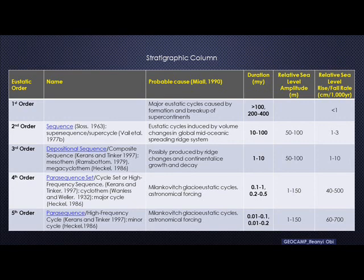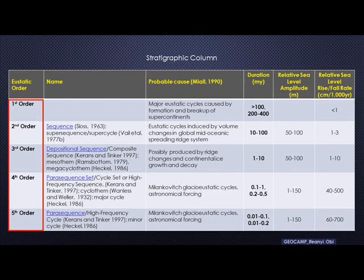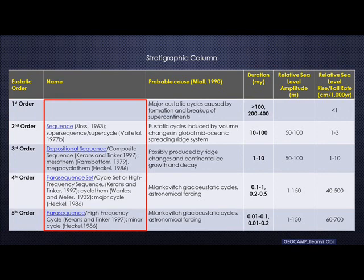Taking a look at this table — it's actually a stratigraphic column — referencing a lot of authors from the past and some more recent ideas. On the first column, we have what we call the eustatic order, which captures the different orders or scales at which the global sea level has changed. We have five orders, first to the fifth order. The second very important column is the nomenclature associated with each order. For example, at the second order, we refer to packages at that scale as a sequence.